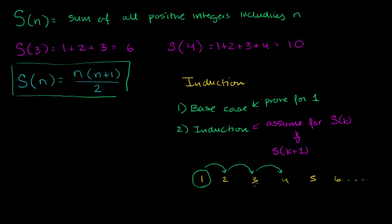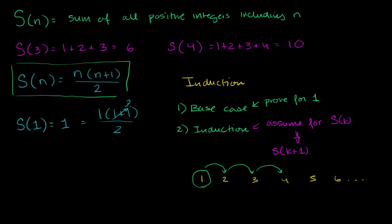Let's actually prove this by induction. Let's do this function on 1. That's just going to be the sum of all positive integers including 1, which is literally 1 — there's no other positive integer up to and including 1. And we can prove that this is the same thing as 1 times 1 plus 1, all of that over 2. 1 plus 1 is 2, 2 divided by 2 is 1, 1 times 1 is 1. So this formula worked for 1. We've proven our base case.